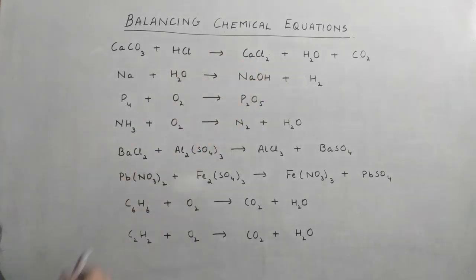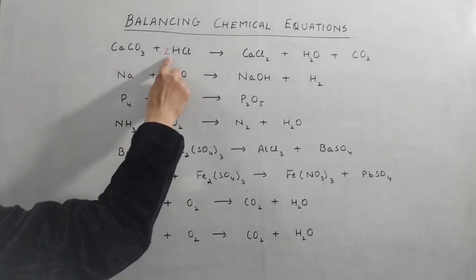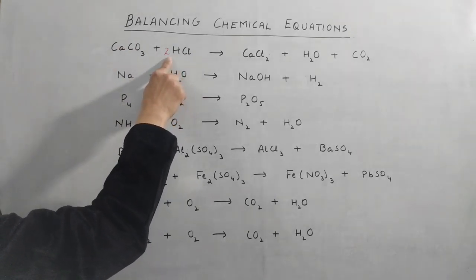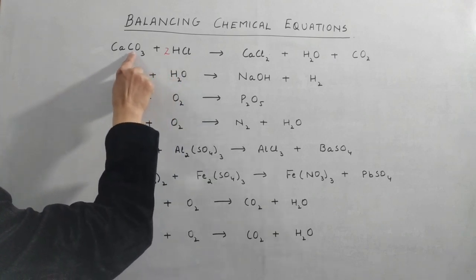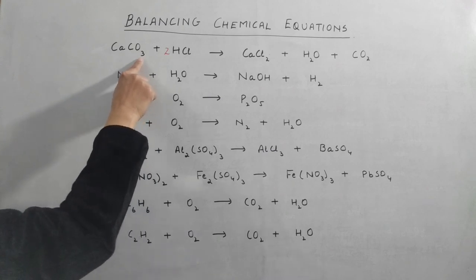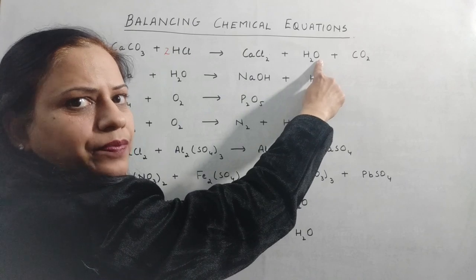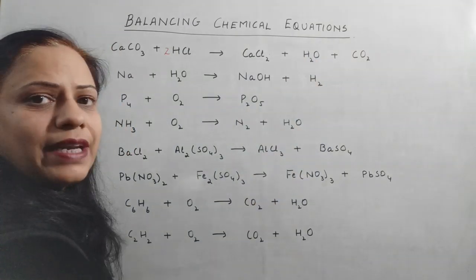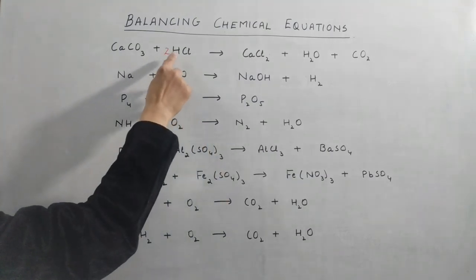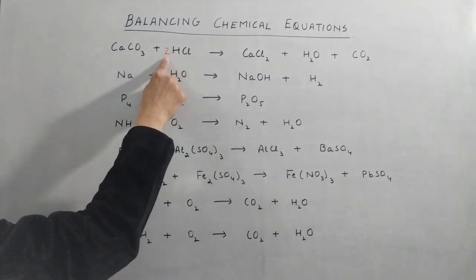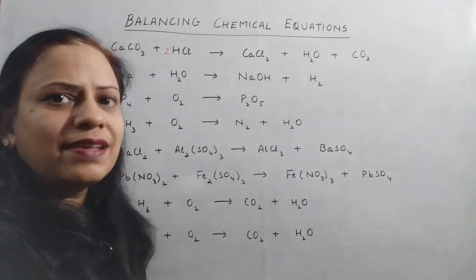Now checking chlorine: there is one atom on the left but two on the right, so we put a coefficient of 2 in front of HCl to make chlorine equal on both sides. For oxygen, there are three atoms on the left and two plus one equals three on the right — oxygen is already balanced. With the coefficient of 2 on HCl, hydrogen is two on the left and two on the right — so the first equation is balanced.